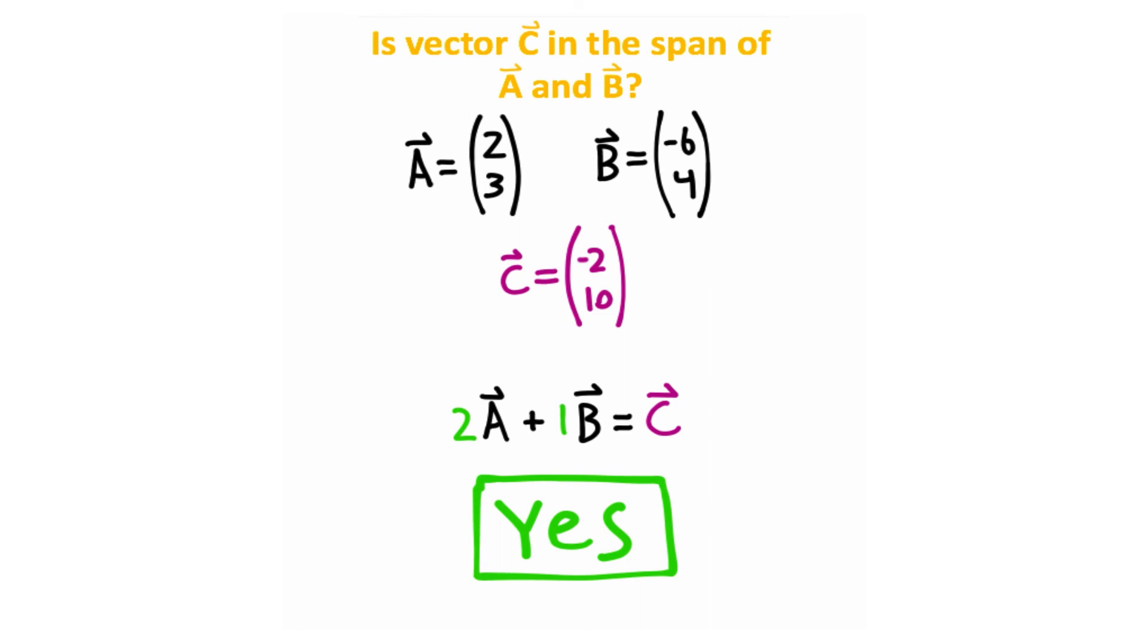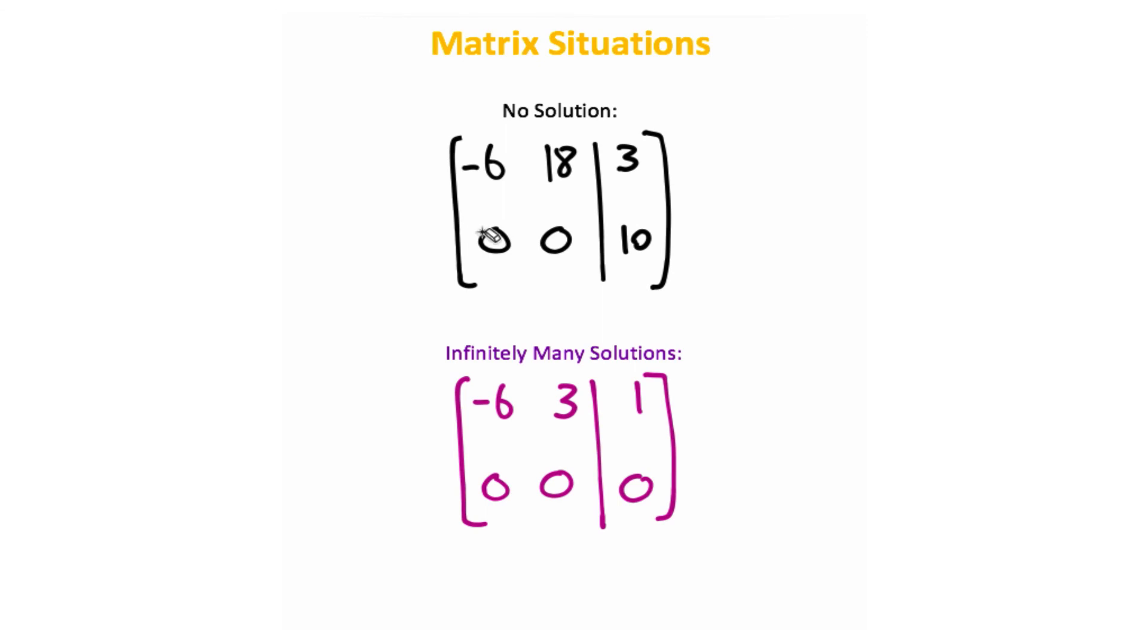Now before finishing off this video, I do want to show you a couple of situations. This is a scenario where you would have no solutions, and this is a scenario where you would have infinitely many solutions. So if we have zeros on the left side of the augmented matrix, but then some sort of number shows up on the right side, that means we have no solution. And if we have a fully zeroed out row like this, that means we have infinitely many solutions.